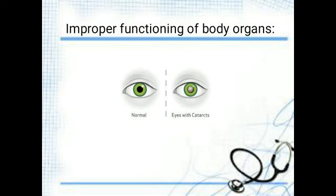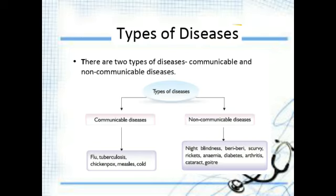Now we discuss types of diseases. There are two types: communicable and non-communicable. Communicable means it easily spreads to another person from the infected person. Non-communicable means it cannot easily spread. Communicable disease is also said to be contagious or infectious. Examples of communicable diseases are flu, tuberculosis, chickenpox, measles, and cold. Examples of non-communicable diseases are night blindness, rickets, cancer, scurvy, arthritis, and heart attack.